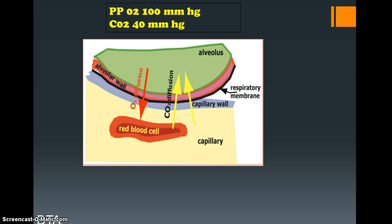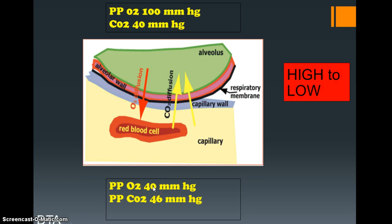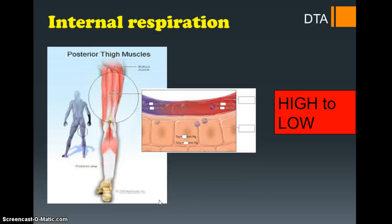Let's add some values to put this into context. As we breathe in, let's say we have a partial pressure of 100 mmHg of O2 and 40 of CO2 inside our alveoli. Within the capillary red blood cells, the partial pressure of O2 is only 40 and CO2 is 46. Comparing the O2 values - 100 versus 40 - there's a clear difference, so O2 moves from high concentration to low. The diffusion gradient is the difference between them, which would be 60.